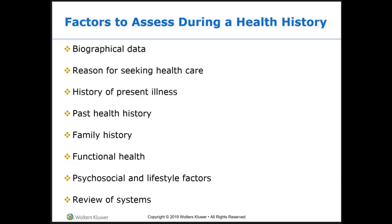Ask them why they are seeking care to help clarify their needs. Obtaining past medical history along with present history is important to gain a broad picture of your patient's health status. Knowing what prior surgeries the patient had is important — for example, I once received a report that my patient had no history of major surgeries, but when I completed the head-to-toe assessment, I discovered the patient had a colostomy. Functional health assessment is also very important. You need to know if your patient has any deficits such as weakness from a stroke or neuropathy in their extremities — anything that could impair their mobility or ability to feed themselves.